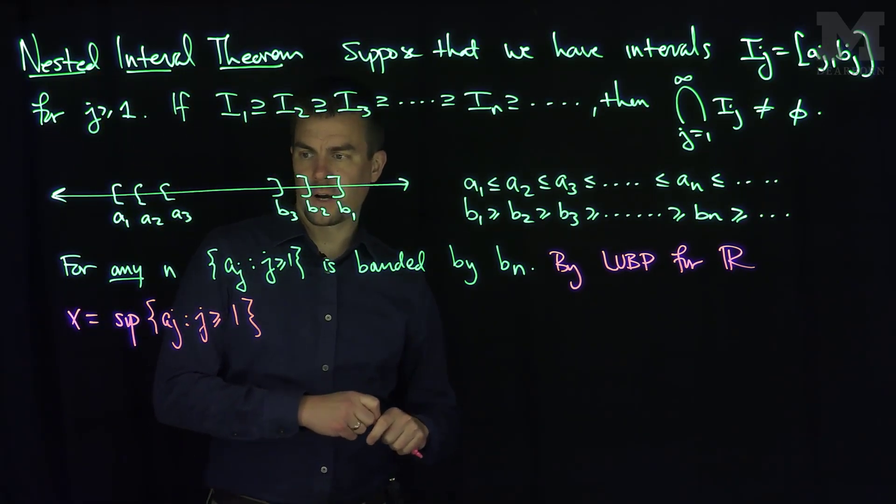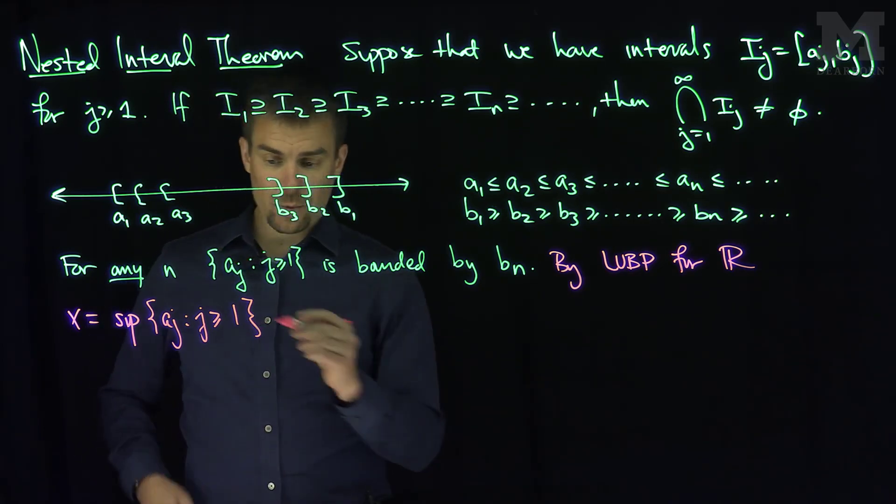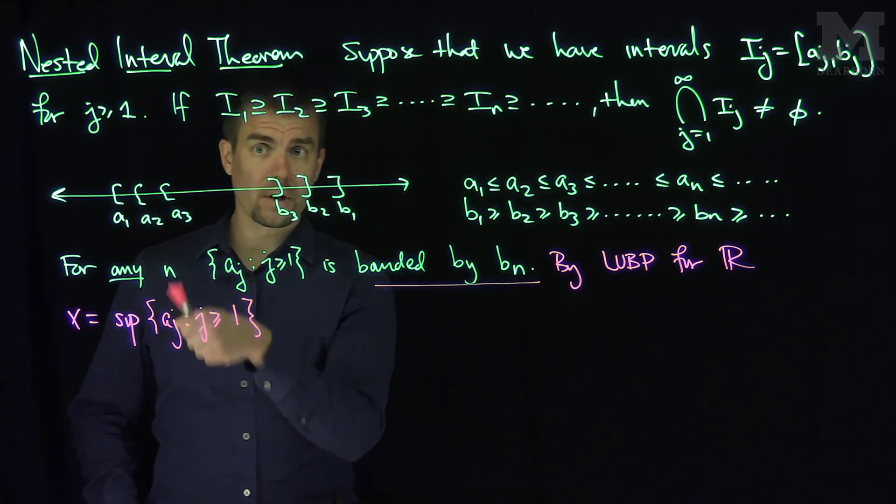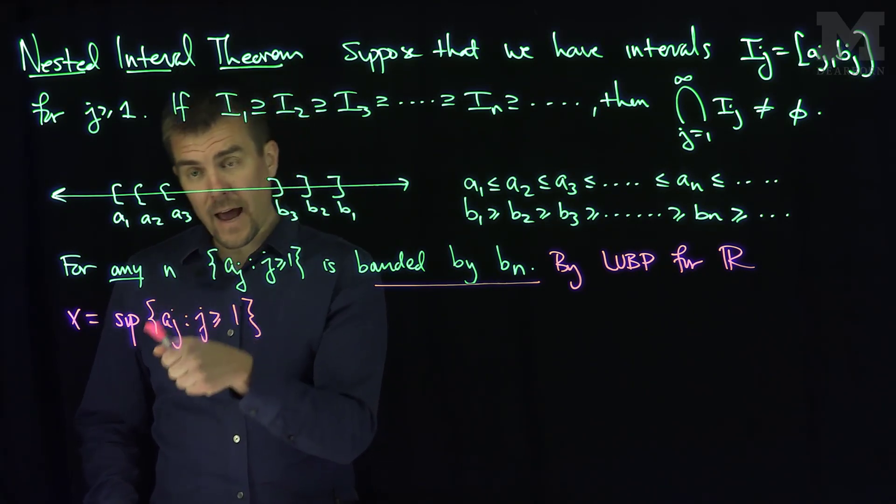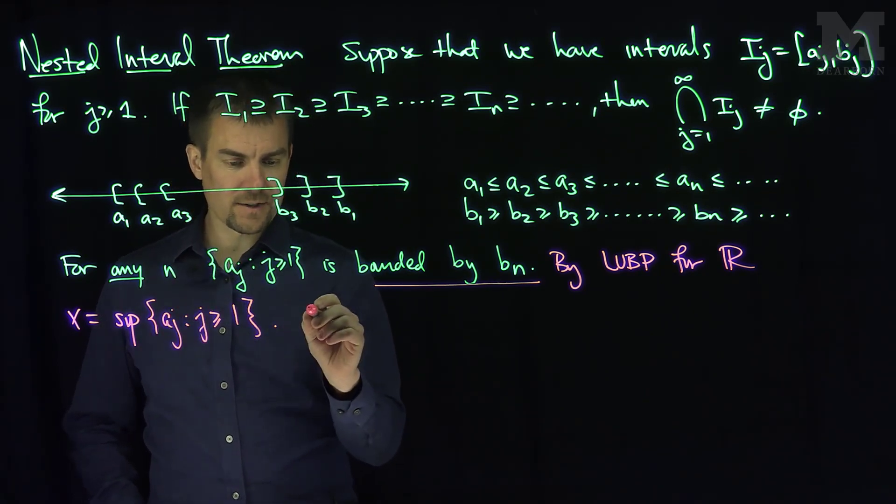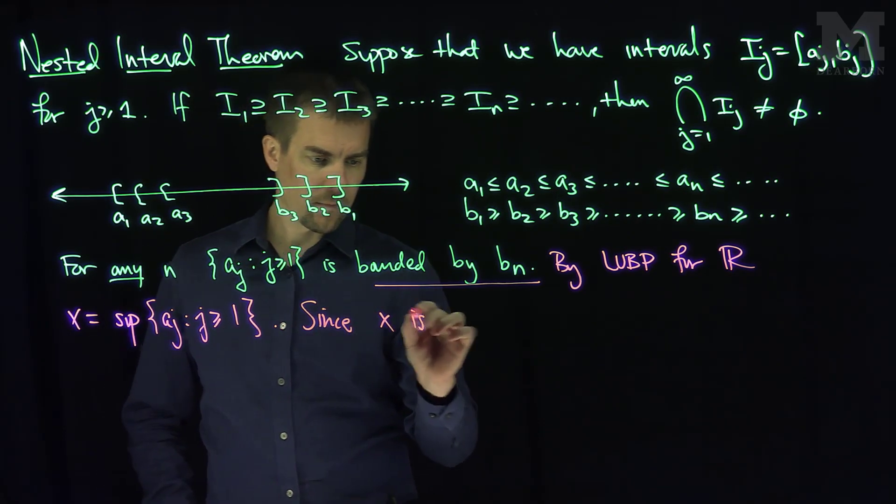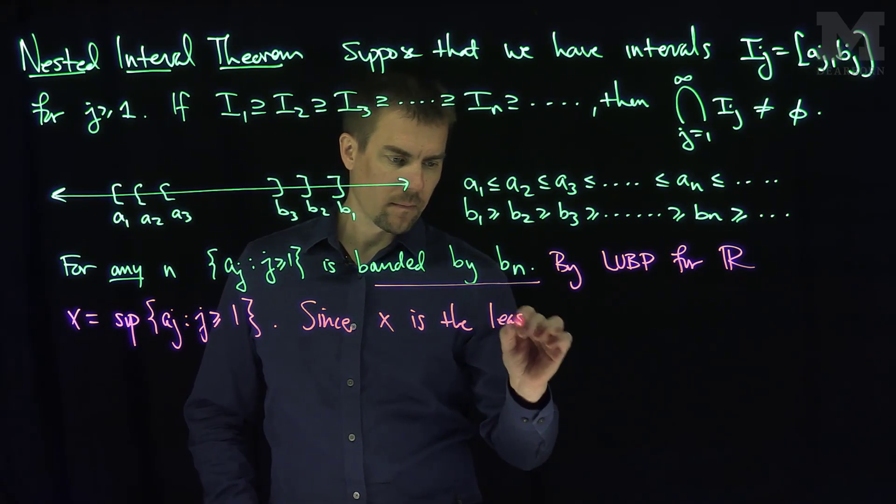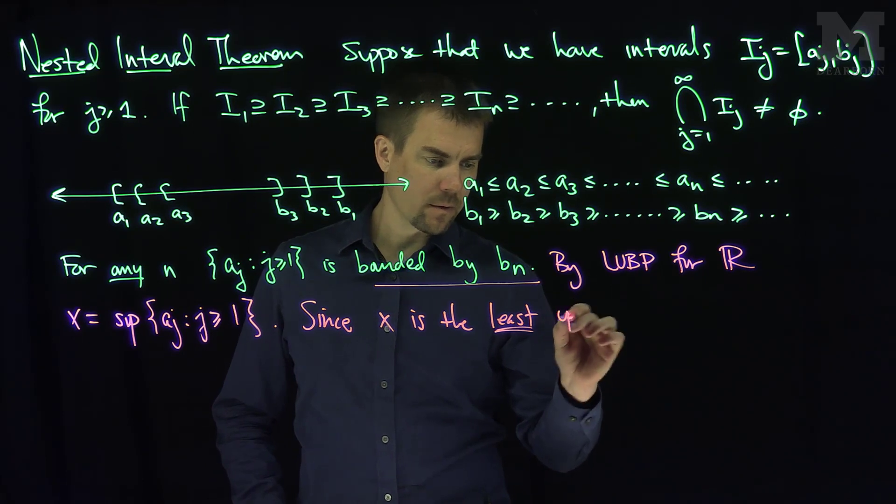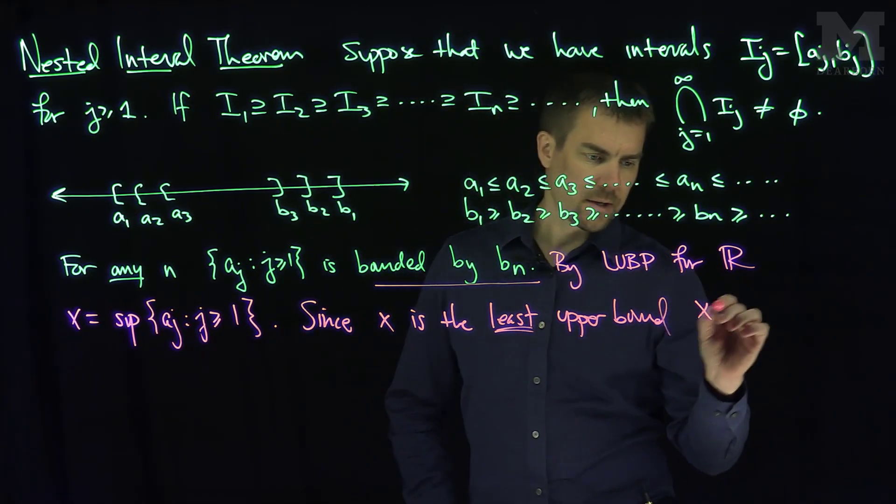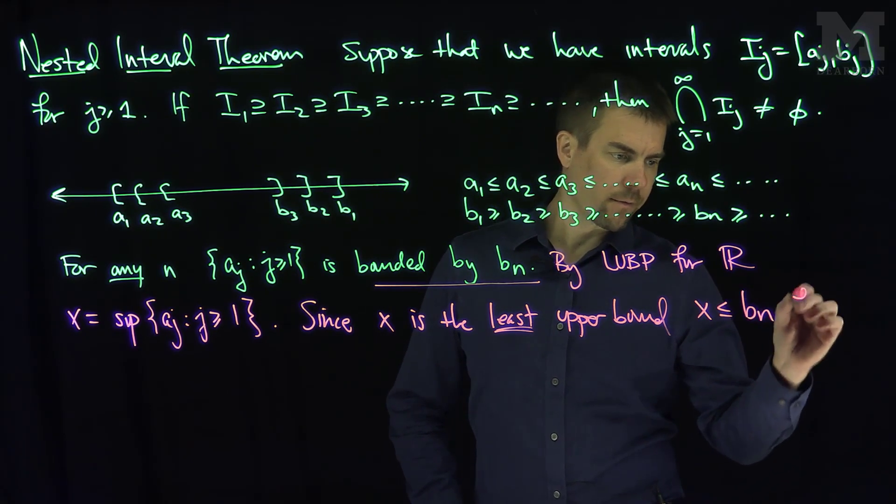And so note that x is the least upper bound, right? So we have one thing automatically, so all of the bn's are upper bounds for the collection of the a's. And x is the least of them, since x is the least upper bound, x is less than or equal to bn for all n.